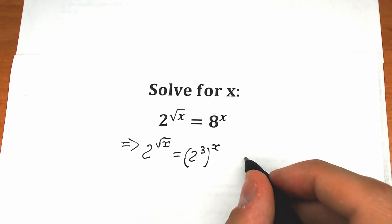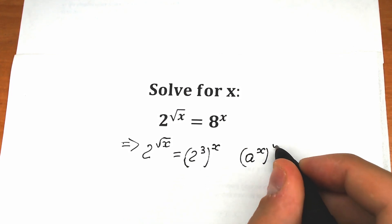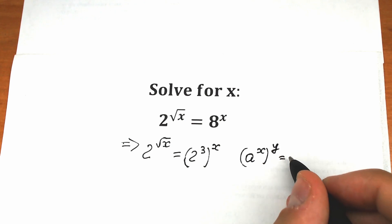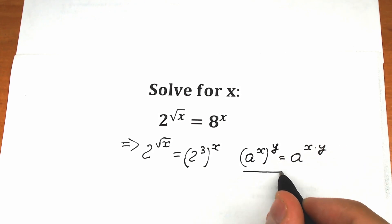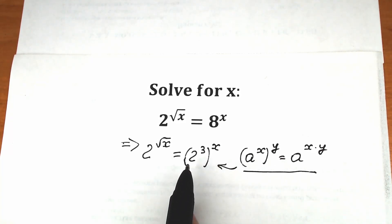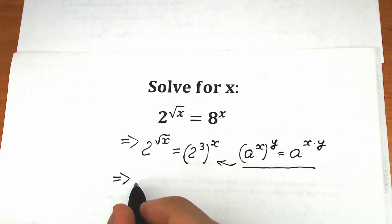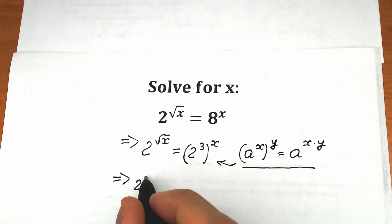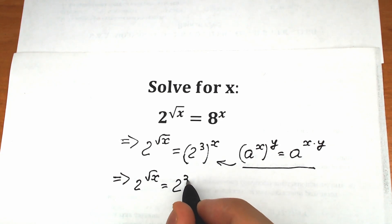Now let's look at this property: a to the power x, raised to the power y, equals a to the power x times y. This is a basic rule. Let's apply this rule on the right side. So this becomes 2 to the power 3x. As a result, we can write: 2 to the power square root of x equals 2 to the power 3x.